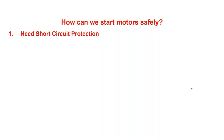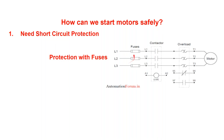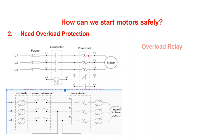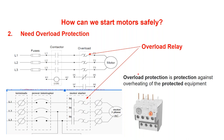A better solution was needed. First you need short circuit protection — either fuses or a breaker on the front side — but you also need overload protection. The overload relay protects against overheating of the protected equipment.